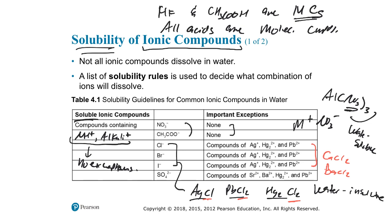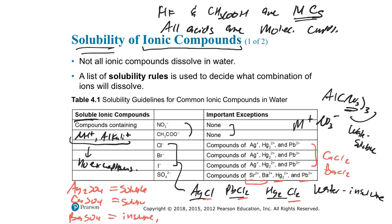Sulfate is generally soluble, with exceptions for strontium, barium, mercury-one, and lead — but not silver or calcium. So Ag₂SO₄ is soluble, CaSO₄ is soluble, but BaSO₄ is insoluble and PbSO₄ is insoluble in water.